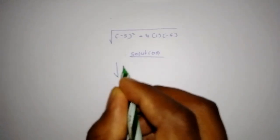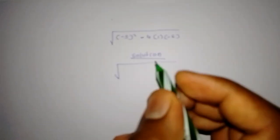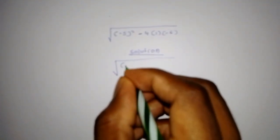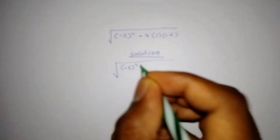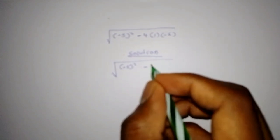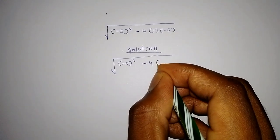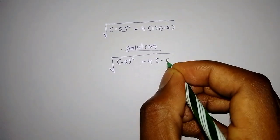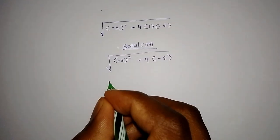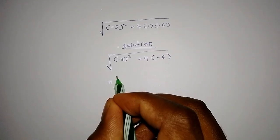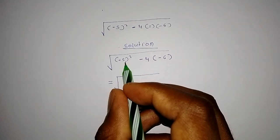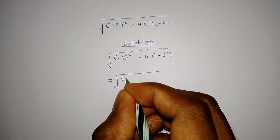First, we have to know the value of negative 5 squared, and we'll need to multiply negative 4 by negative 6. Negative 5 squared will give us 25.